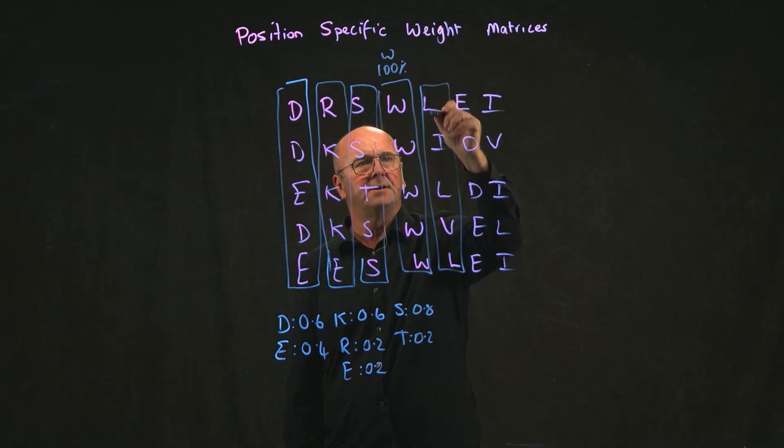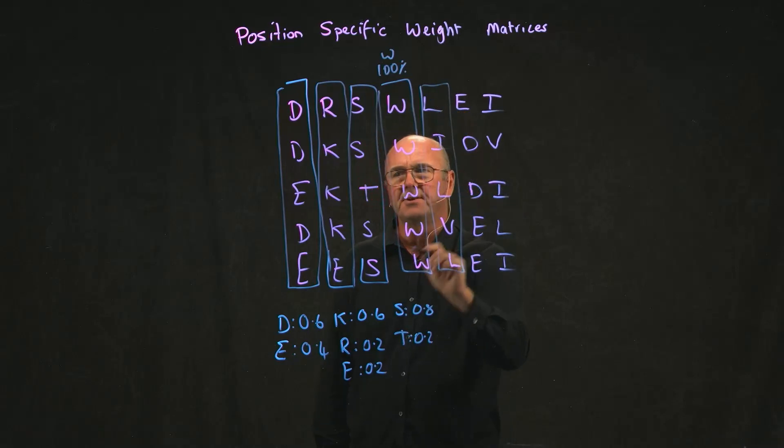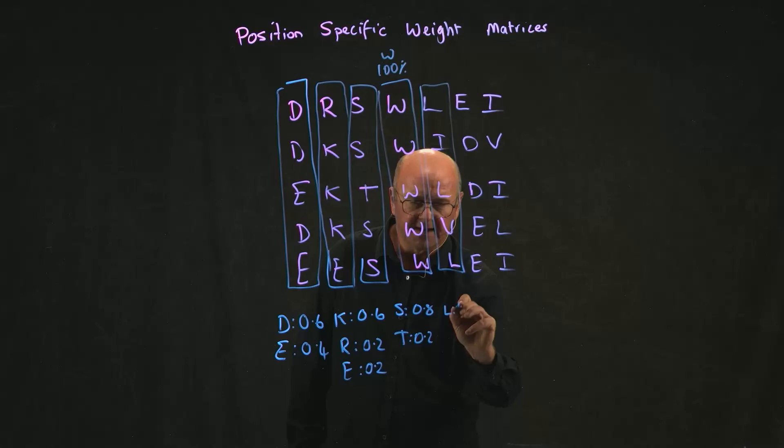At position five, we've got one, two, three L's, one I, and one V. So we have 0.6 L, 0.2 I, and 0.2 V.